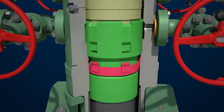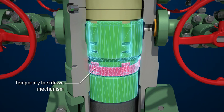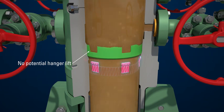The wellhead works with an optional temporary lockdown mechanism for landing casing hangers. The lock ring is used to remove the potential for hanger lift during casing cementing.